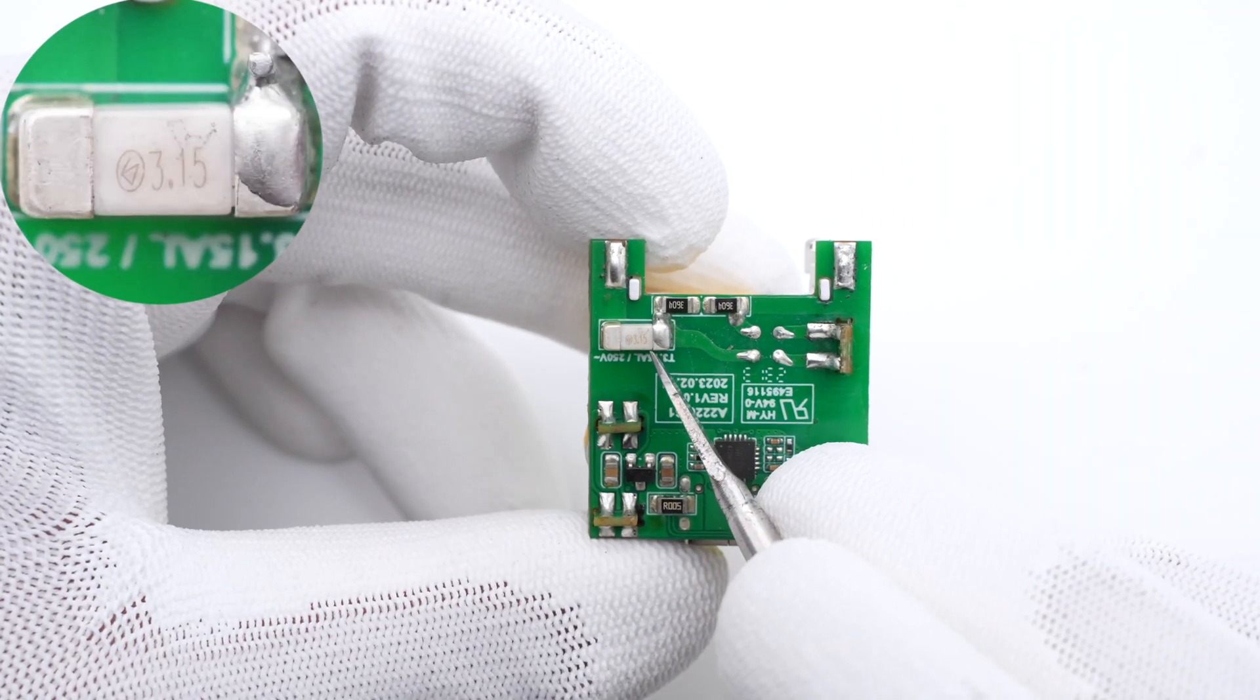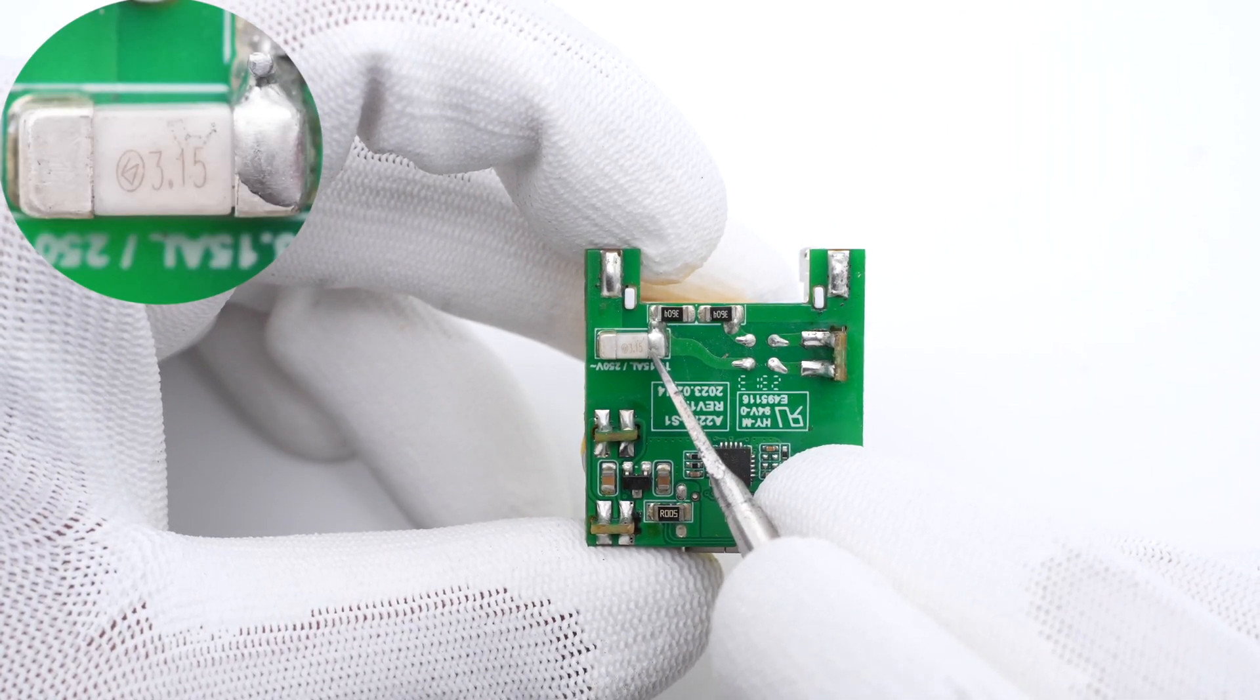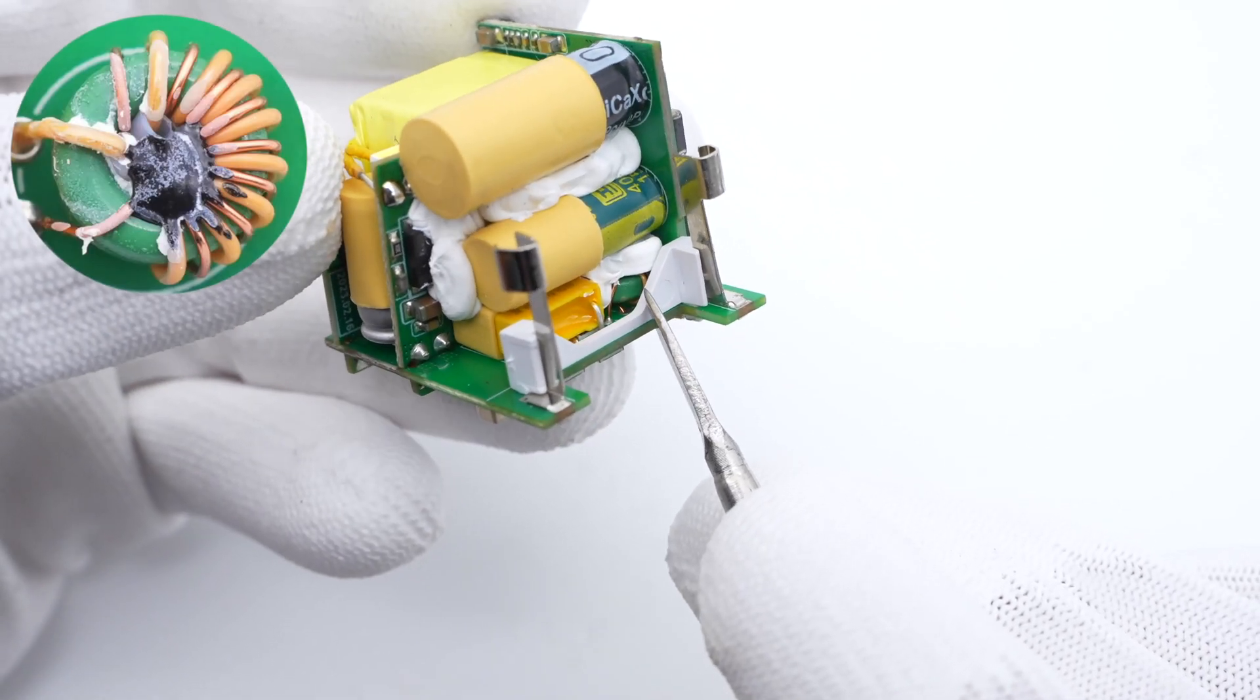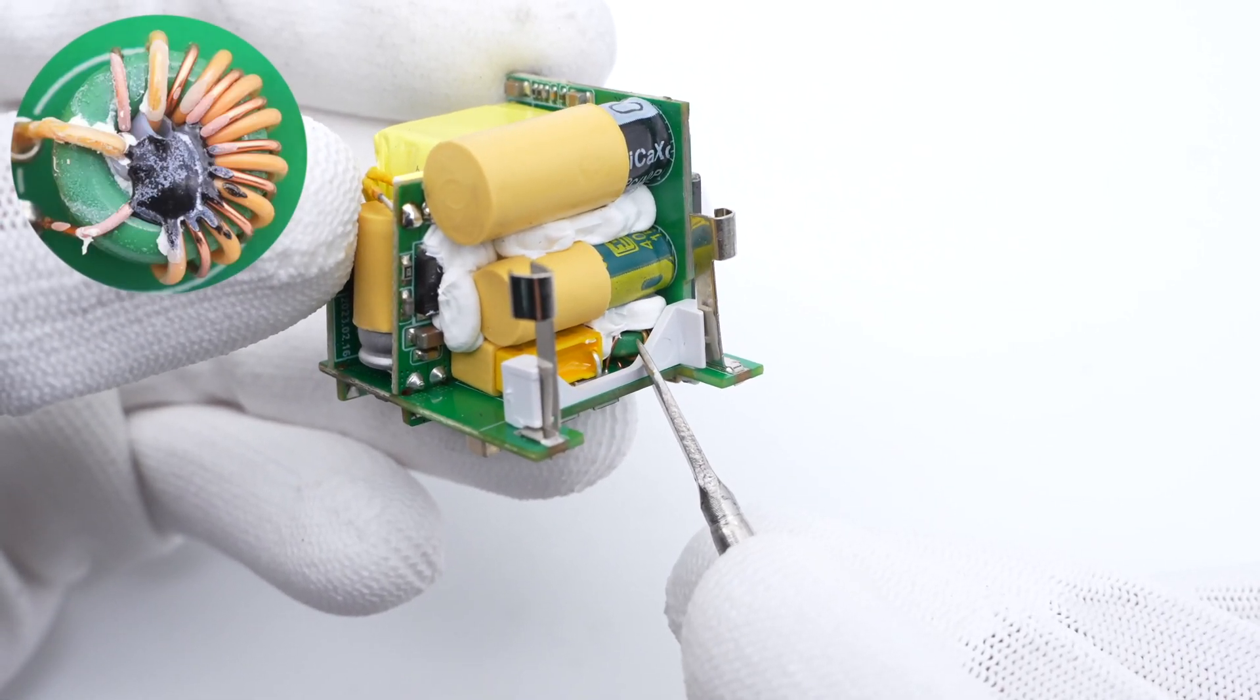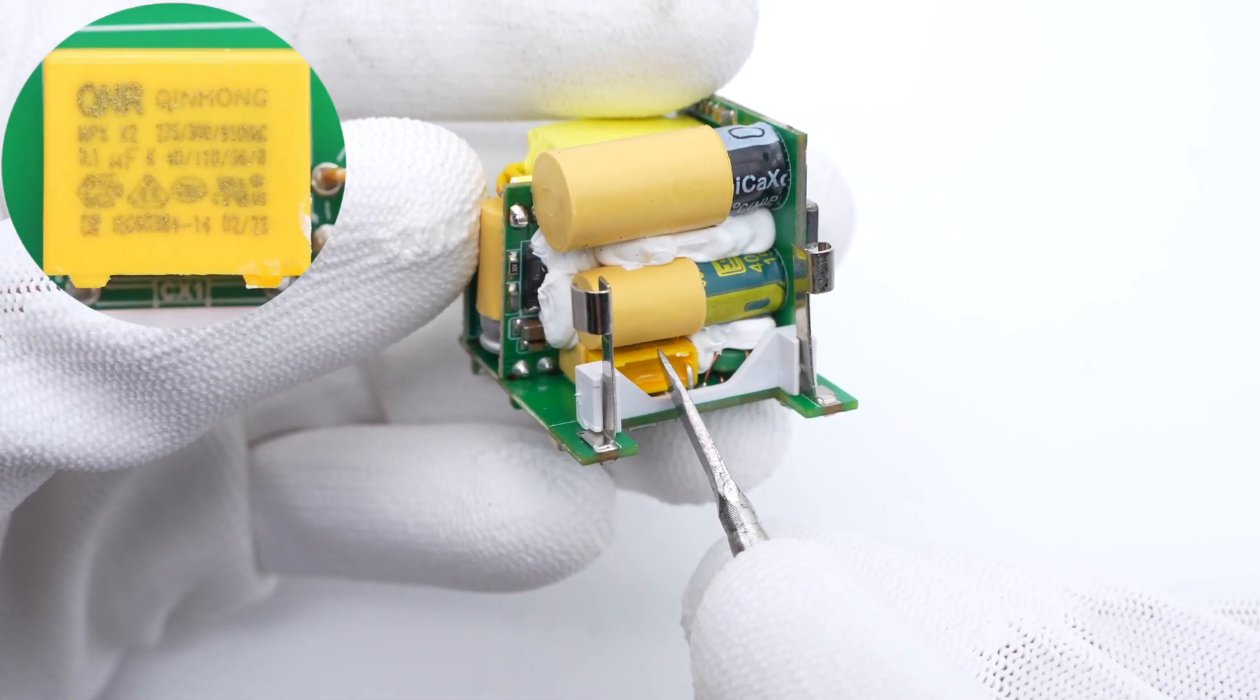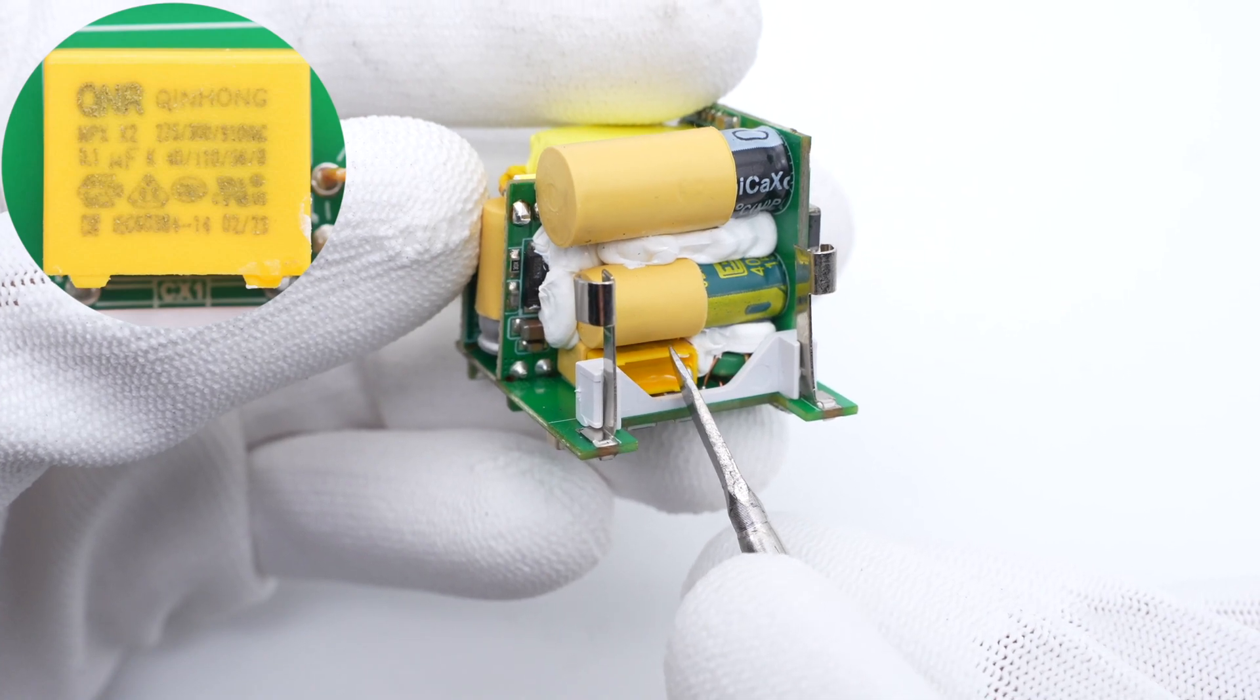The input fuse is from BetterFuse 244 series, 3.15A, 250V. The common mode choke is wound with magnet wires and insulated wires. The safety X2 capacitor next to it is from QNR, 0.1μF.